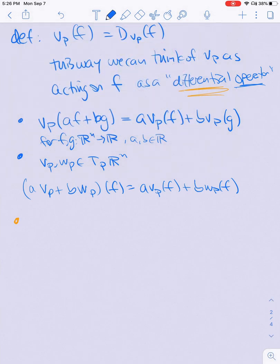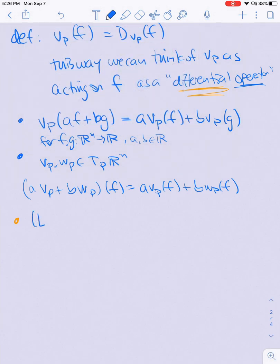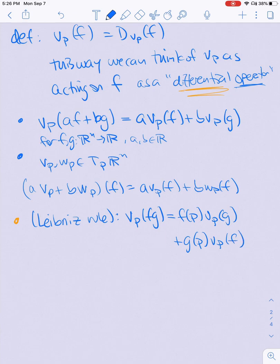What do I mean by v_p being specifically a differential operator? I mean that it satisfies what I'm going to call the Leibniz rule, which is basically a product rule. If I apply v_p to a product, I'm going to get f at a point times v applied to g plus g at that point times v_p applied to f. This tells me that the product rule holds.